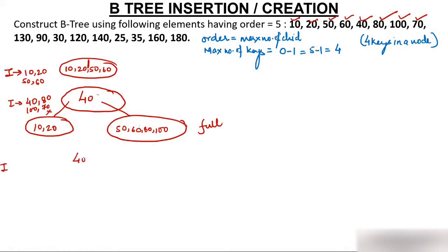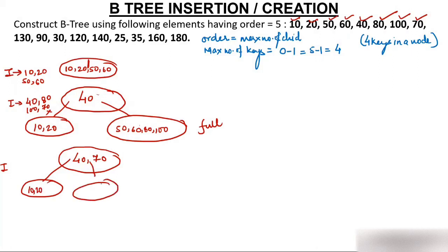Virtually insert 70 — it takes the place between 60 and 80. The middle element of {50, 60, 70, 80, 100} is 70. So 70 goes up to the root. The root now has 40 and 70. Left of 40: {10, 20}. Between 40 and 70: {50, 60}. Right of 70: {80, 100}.